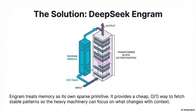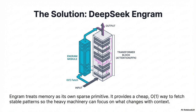It's not RAG — you're not going out to an external database. When a token comes in, the normal forward pass gets four quick steps added at the beginning before it ever hits the big attention blocks. First, tokens are processed to create canonical IDs. Second, the system hashes N-grams from those IDs and instantly retrieves the embeddings.